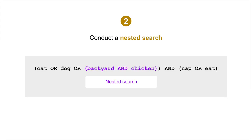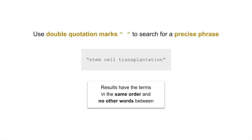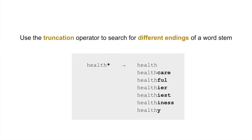The next operator is double quotation marks. Use this to search for a precise phrase. When an individual concept consists of a group of words, such as stem cell transplantation, enclose the phrase in double quotation marks. Results will have the terms in the same order and no other words between them — it's a precise search. Lastly, use the truncation operator to search for different possible endings of a word stem by adding the asterisk symbol to the end of a stem. For example, 'health*' can retrieve terms starting with health.